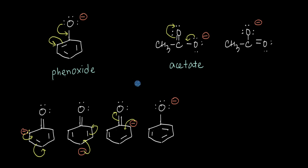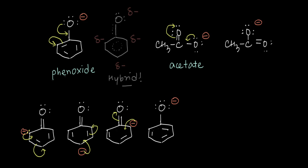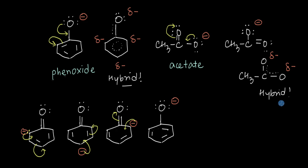A greater number of resonating structures will make the molecule more stable, because a greater number of resonating structures implies that the charge is getting delocalized more, thereby reducing the charge density and making it more stable. So if you look at the resonance hybrid of phenoxide, the charge is not localized over the oxygen atom but is getting distributed over oxygen and three other carbon atoms. The charge gets spread out over four atoms in phenoxide, but in the resonance hybrid of acetate the negative charge gets spread out only between two oxygen atoms.